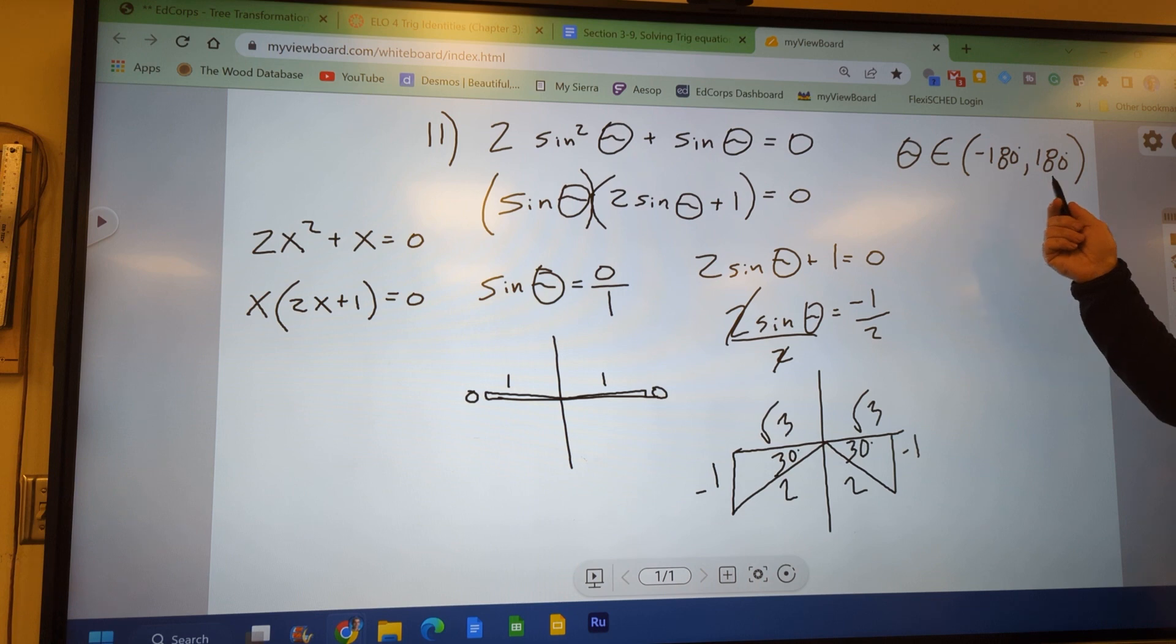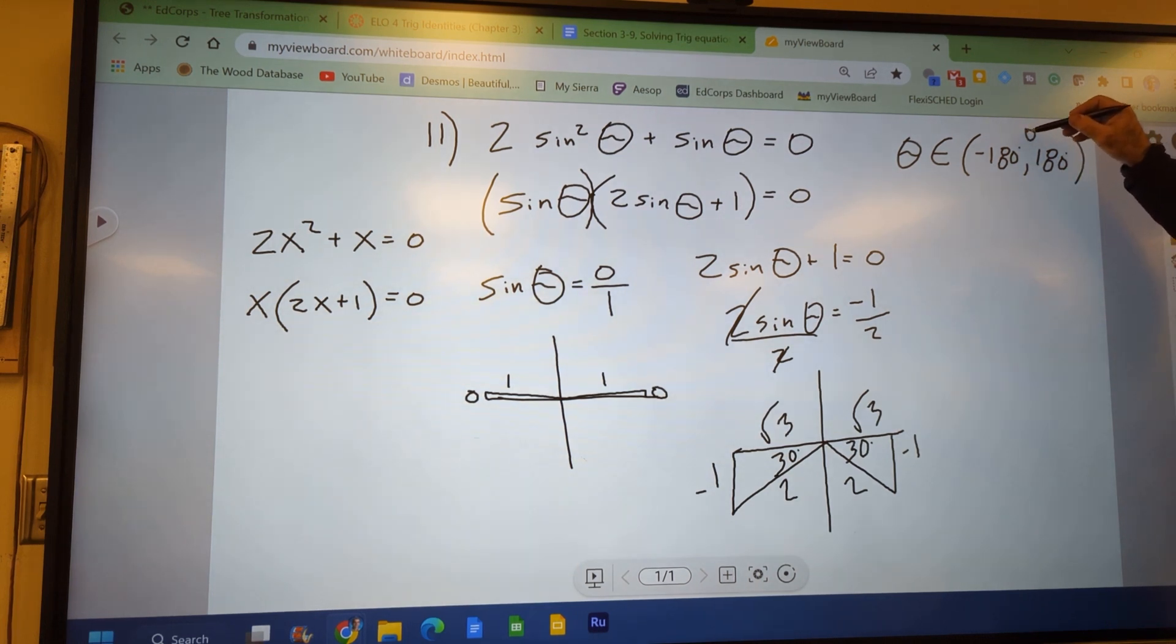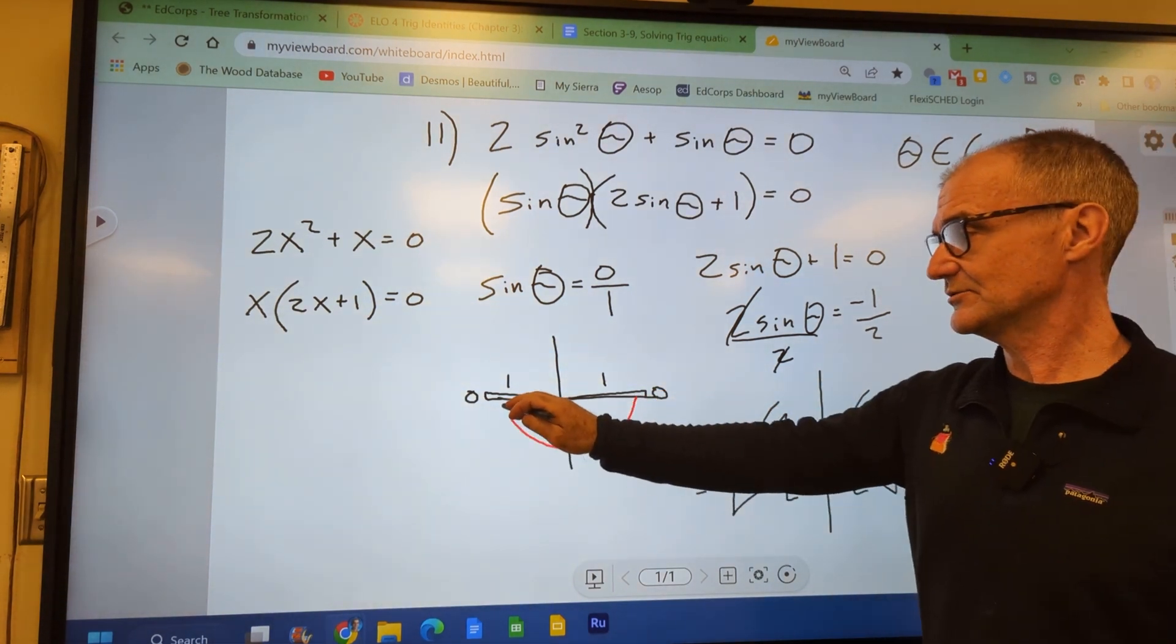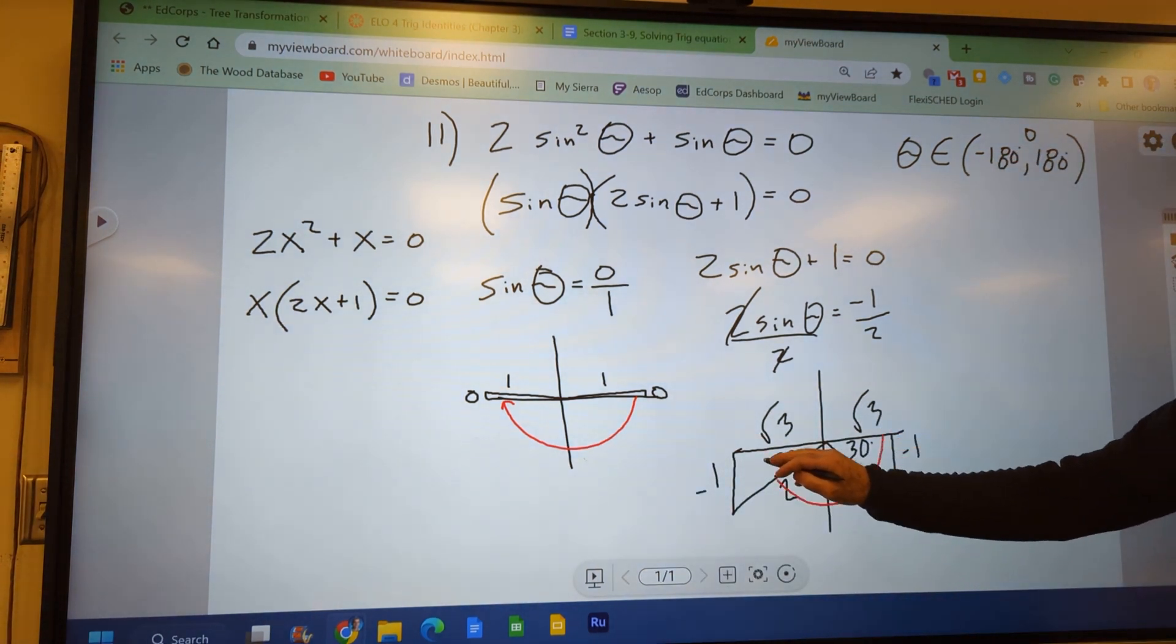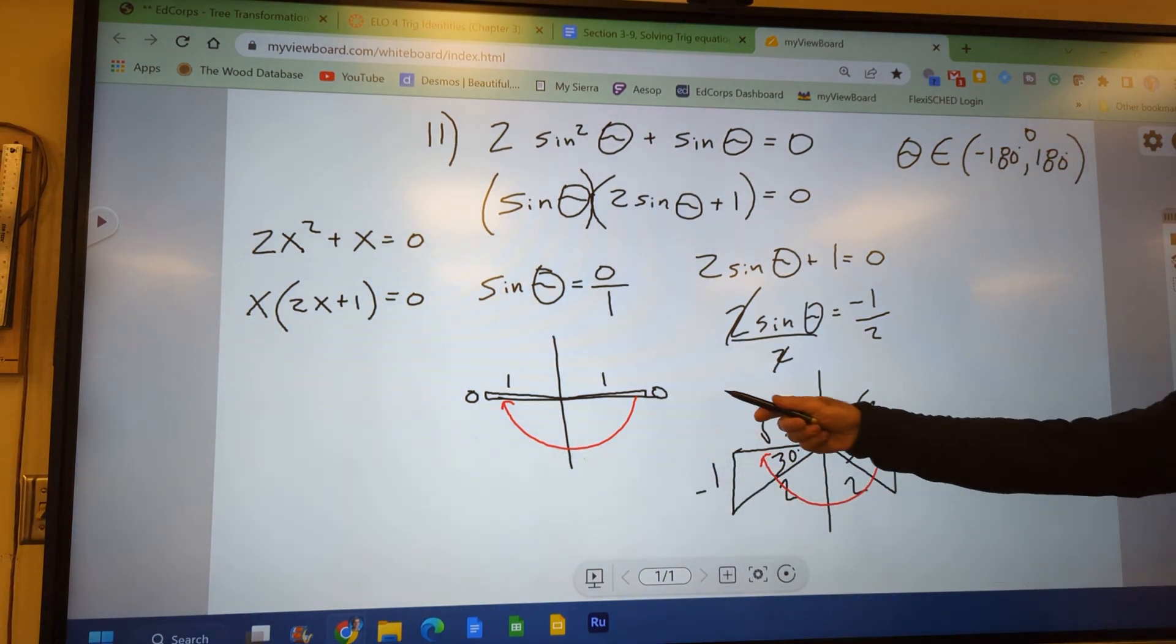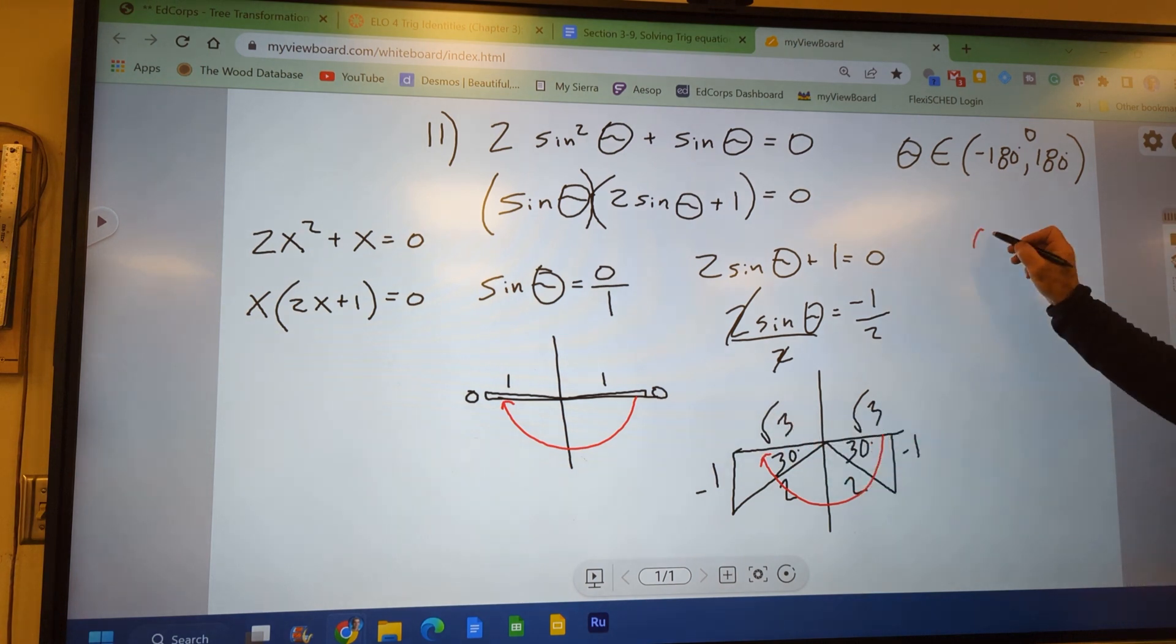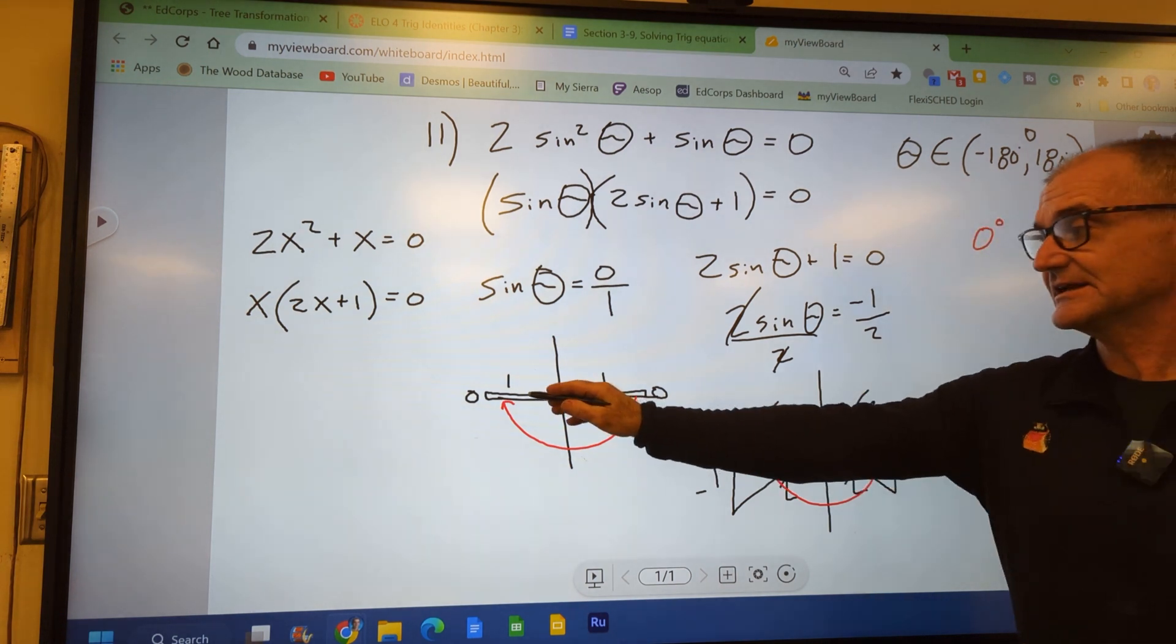And maybe the easiest way to look at this domain is from negative 180 to 0 and then 0 to 180. And I could say I'm going to go from 0 to negative 180. In that window right there, the ones that are going to work is going to be 0 degrees, negative 180 degrees.